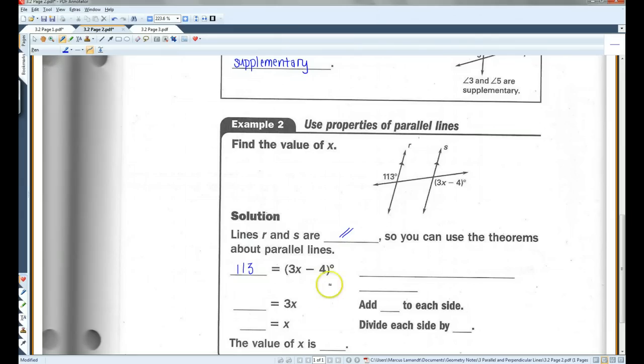So, these two angles are equal. Let's see here. This is the alternate exterior angles theorem. I'm going to add 4 to each side, which would make this 117 equals 3x.